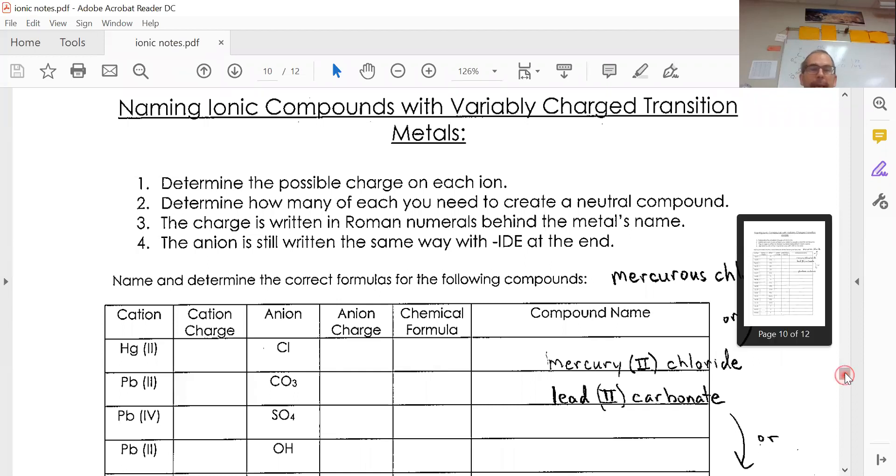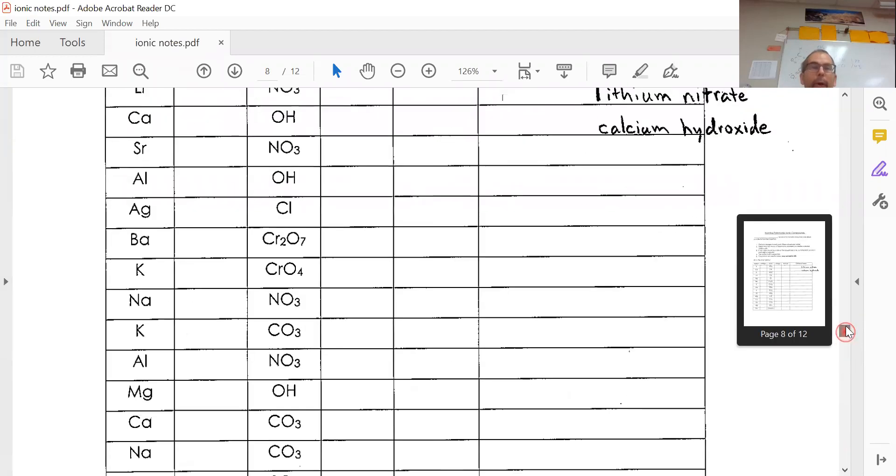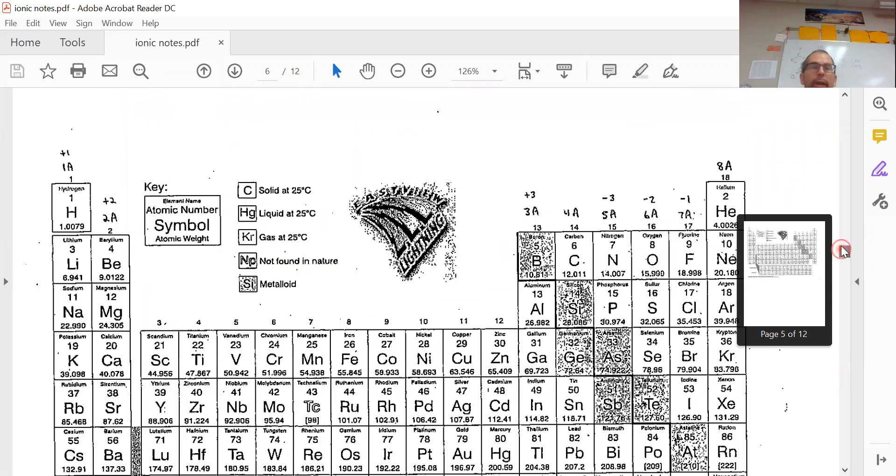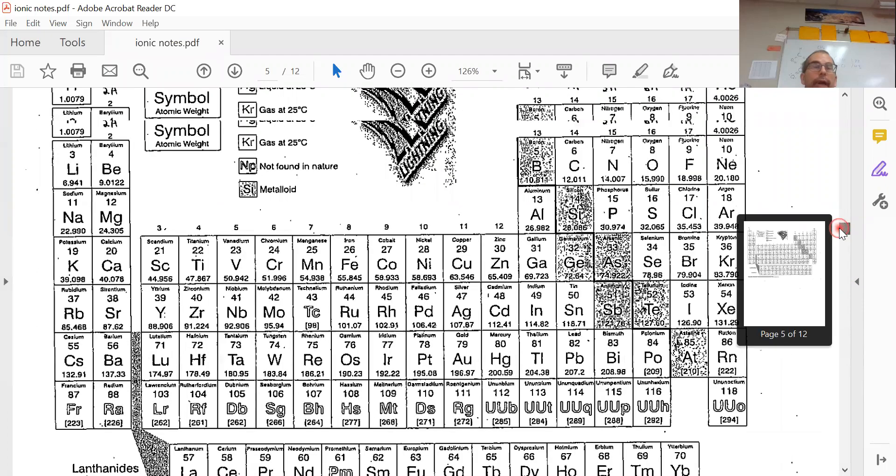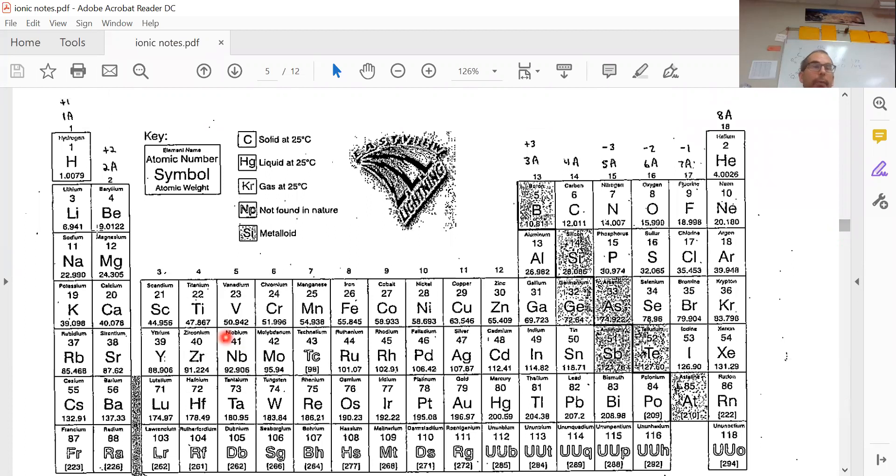Let's take a look at our periodic table. We talked about things in family one having a plus one charge because it loses one electron, family two losing two electrons to become like the next noble gas, these things having minus one or these things having minus two.